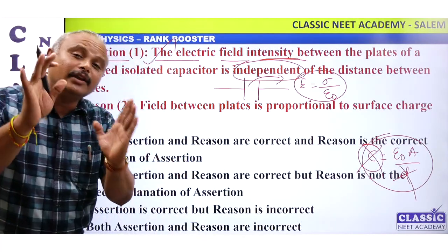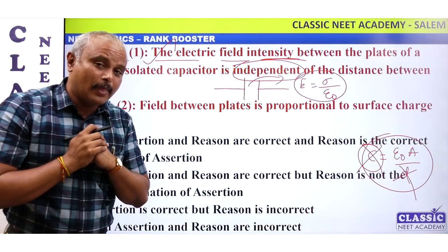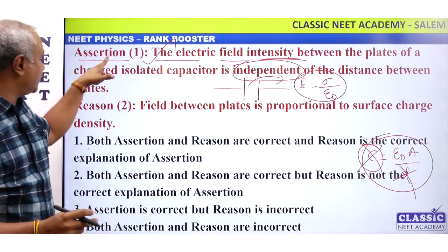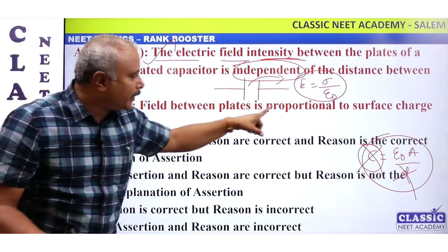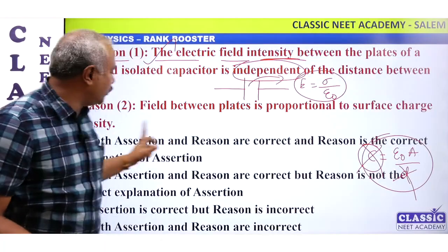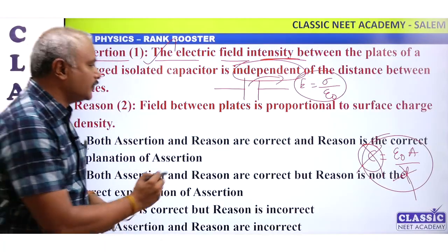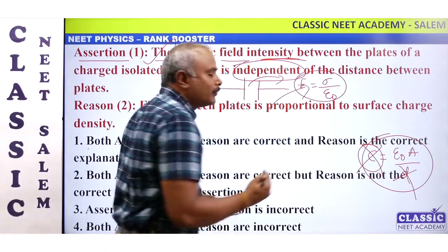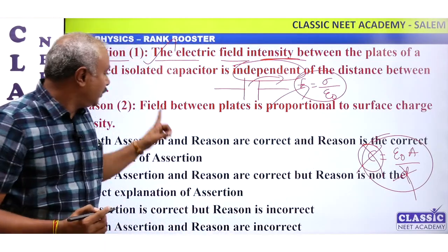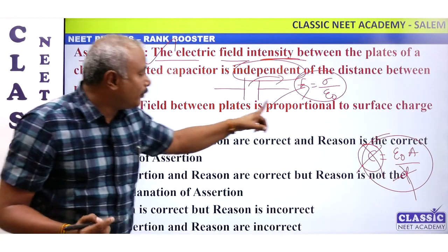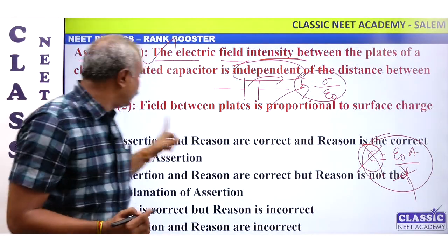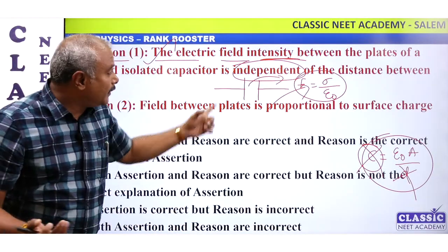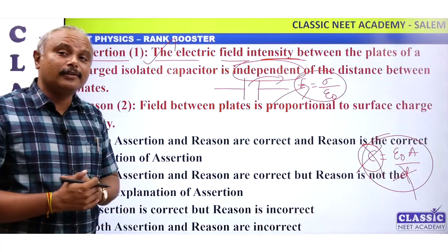What is independent? If the reason is correct — the Reason says: the field between the plates is proportional to the surface charge density. That is correct. That is the correct explanation.